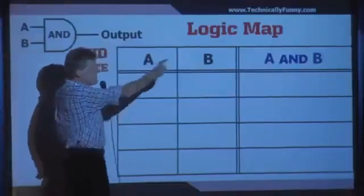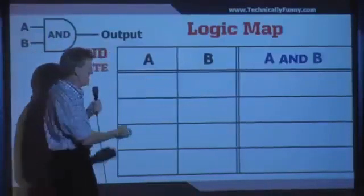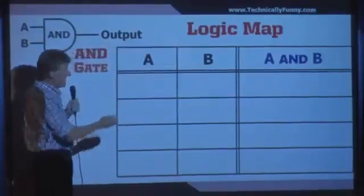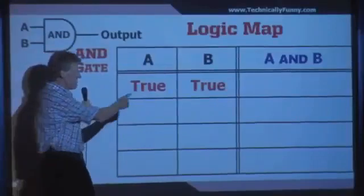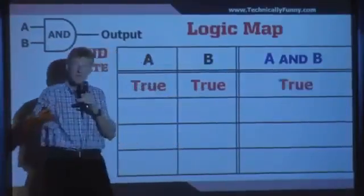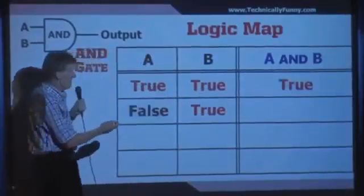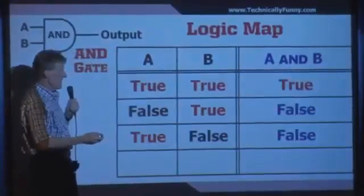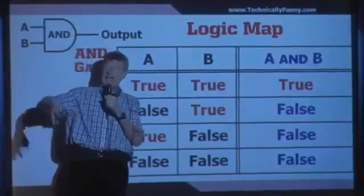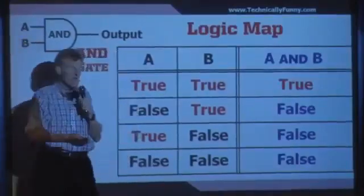AND gates and OR gates — basically there's two inputs to a gate, A and B. An AND gate says if both inputs are true — A is true and B is true — then the output is true. And if either one is false, the output is false. A has to be true and B has to be true.